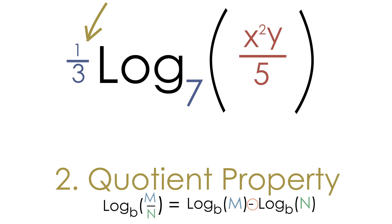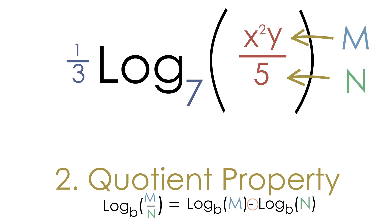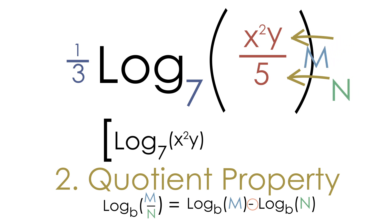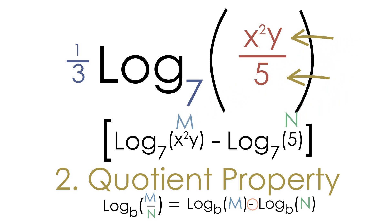Notice in our example we have two things being divided: x squared y divided by five. So x squared y is our numerator (m), and five is our denominator (n). We separate them with a minus sign, giving us log base seven of x squared y, minus log base seven of five — and all of this is being multiplied by one-third.